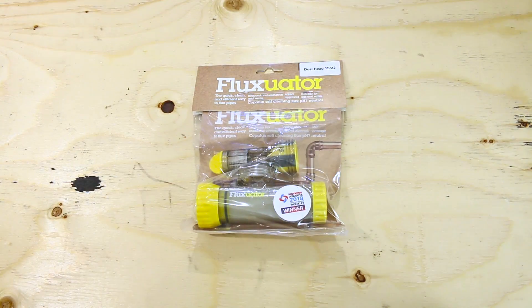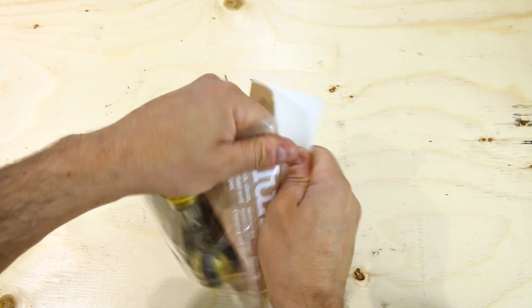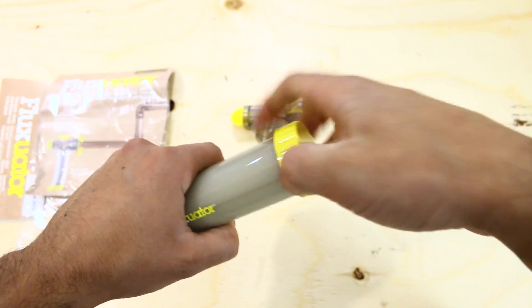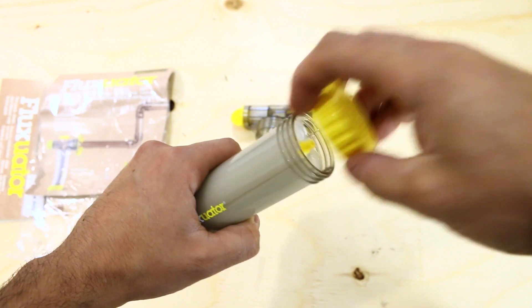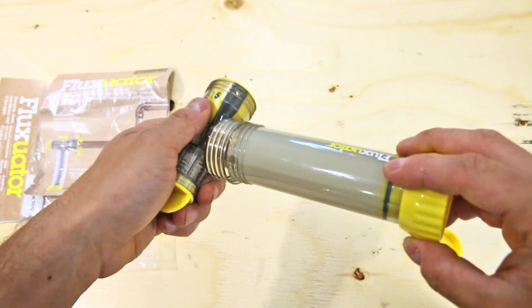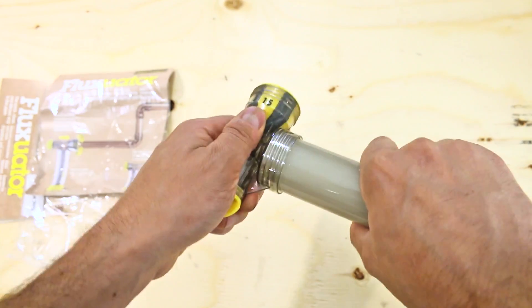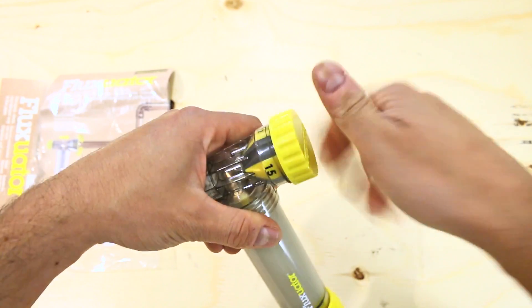So here it is out of the box. It comes disassembled in the package so let's assemble it together. The first thing you need to do is to remove the protective cap on the refill, then screw the refill onto the head until it's nice and tight and it's assembled and ready to be used.